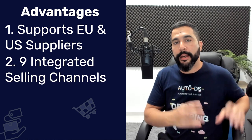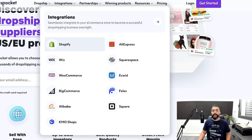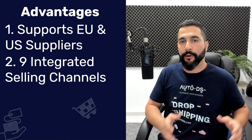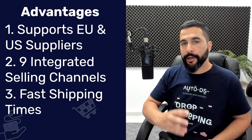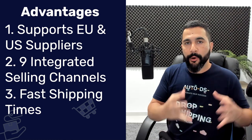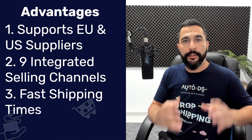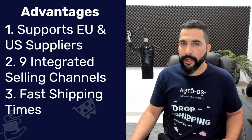Spocket also integrates with nine selling channels. If I hover over integrations on their website, you can see all the selling channels they support — whereas Oberlo only supports Shopify, here you have more marketplaces like Wix, WooCommerce, BigCommerce, Squarespace, Ecwid, and so forth. Since we're working with US or European suppliers, we're going to get fast shipping times if those are the countries we're targeting. So if I'm dropshipping from US warehouses to a US audience or from European warehouses to a European audience, we get very fast shipping times — which is different from dropshipping with AliExpress.